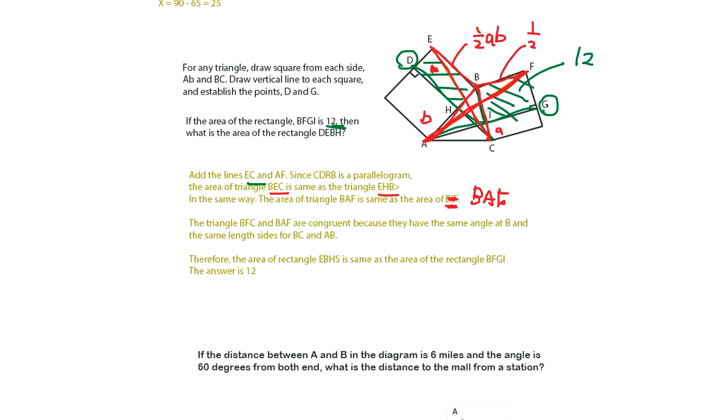You know why? Because suppose this is A, this is B, then area of this is 1 over 2 AB. And the area of this is also 1 over 2 AB. So they are the same. The triangle BFE and BAF are congruent because they have the same angle at B. The same angle at B. Here's the tricky. This angle and this angle is same. Because this is a common angle here. ABC is common.